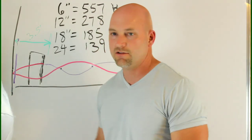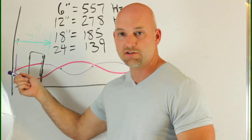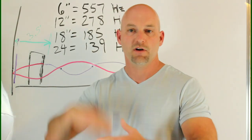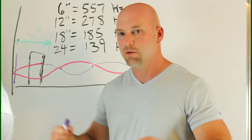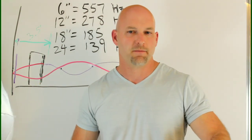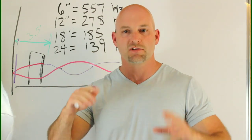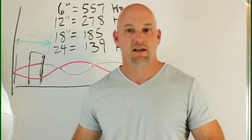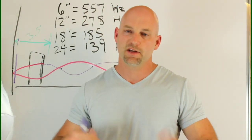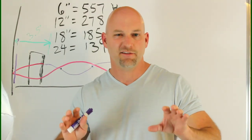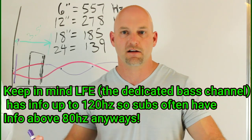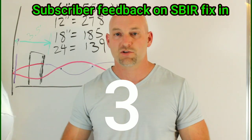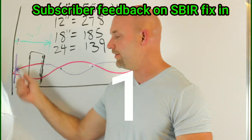If your subs are up front and you have an SBIR issue at 90 or 80 Hz coming off the front wall that you can't absorb, there's another way to fix it: just cross your subs up above 80 Hz. That's another reason to have a higher crossover point. If the subs are up front, you don't have to worry as much about localization — sure, once you get above 80 Hz you can start hearing where the bass is coming from, but if the subs are located up front it's not going to be an issue. Even if subs are elsewhere in the room, raising the crossover can fix an SBIR issue you can't fix with acoustic panels.